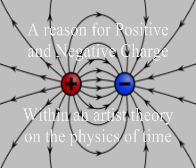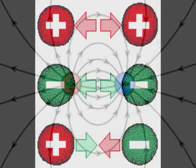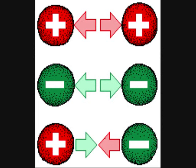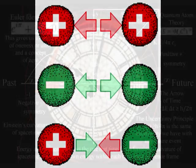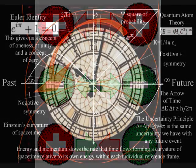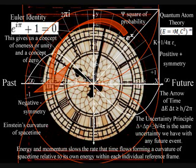I am on YouTube promoting my theory on the physics of time as a physical process. This video explains why electric charge comes in two types, positive and negative, and why charge of the same type repels and opposite charge attracts. It does this by explaining time as an interactive process that is non-linear, with a timeline or arrow of time for each reference frame.